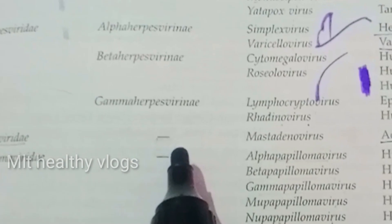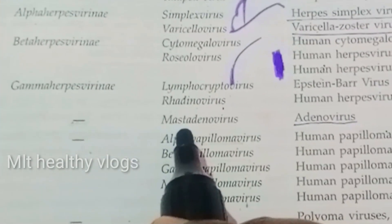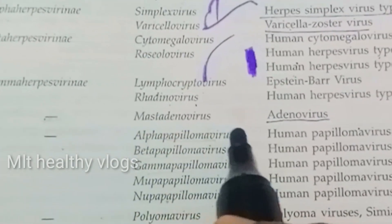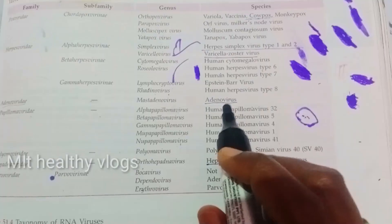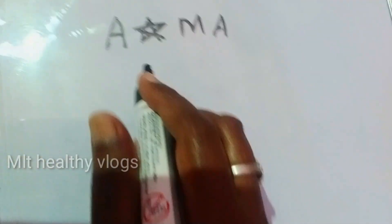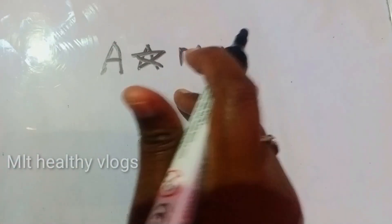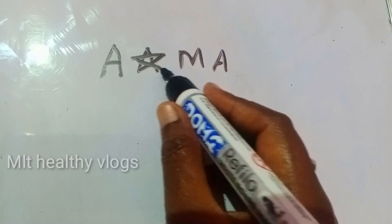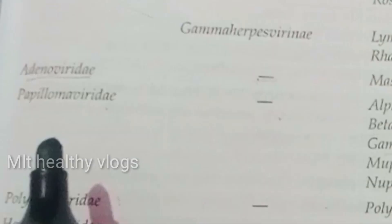Adenoviridae: there is no subfamily. The genus is Mastadenovirus, and the species is Adenovirus.